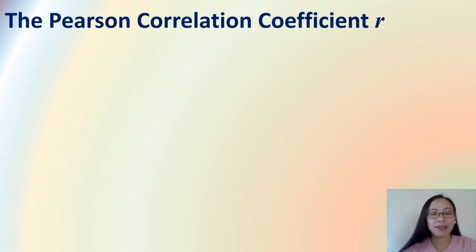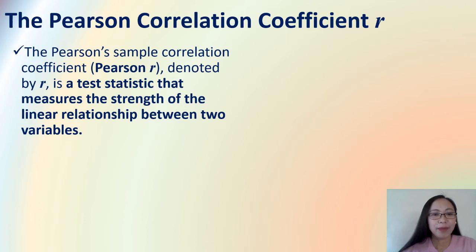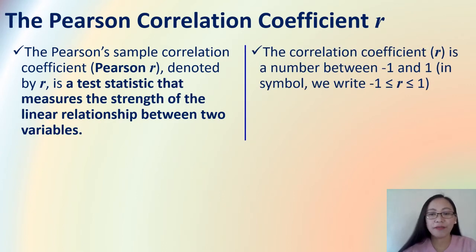What is the Pearson's correlation coefficient R? The Pearson's sample correlation coefficient, also known as Pearson R, or denoted simply by R, is a test statistic that measures the strength of the linear relationship between two variables. The correlation coefficient R is a number between negative 1 and 1. In symbol, we write negative 1 is less than or equal to R less than or equal to 1.